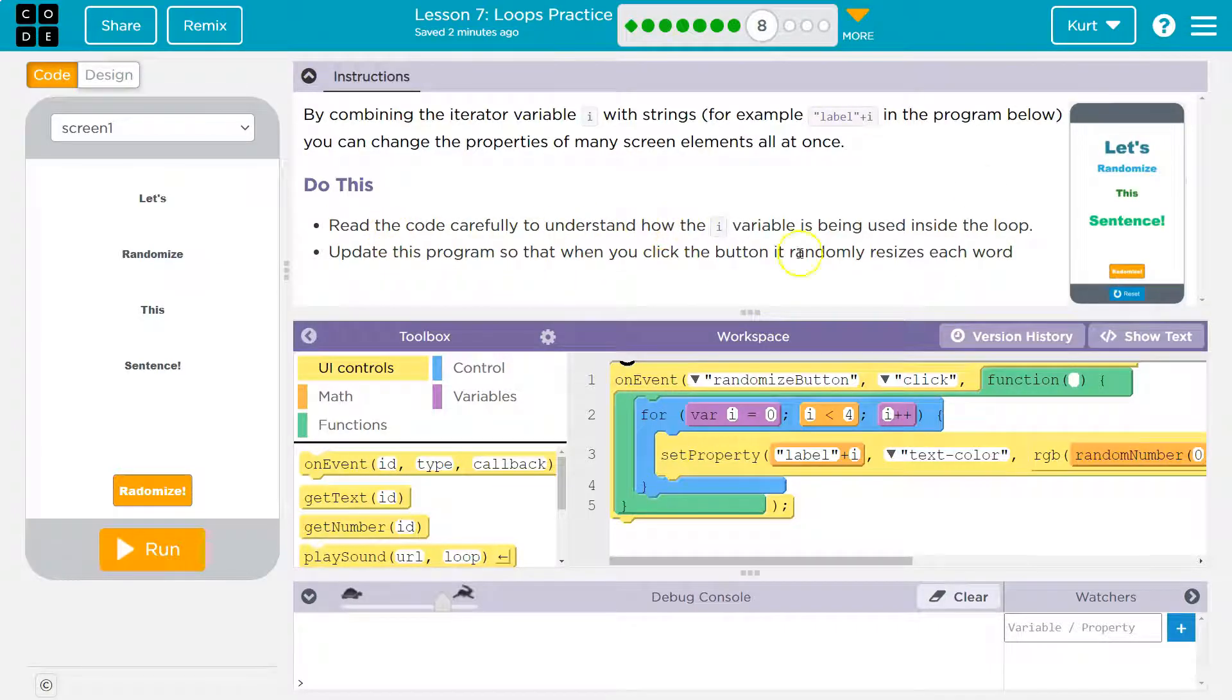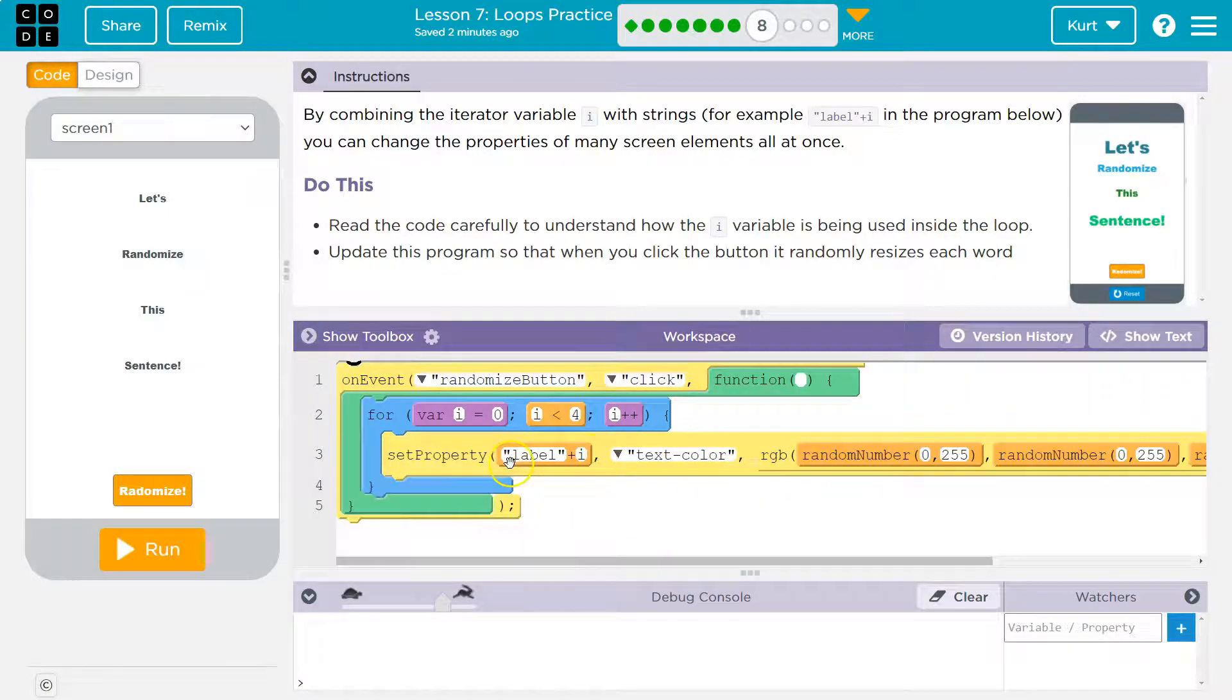Do this. Read the code carefully to understand how the i variable is being used inside the loop. And like I just said, this is changing the text color, it looks like, of everything named label something number. So this is label 0? Yep. And so i starts at 0. It has to be less than 4. So is 0 less than 4? Yes. Dips down into this.